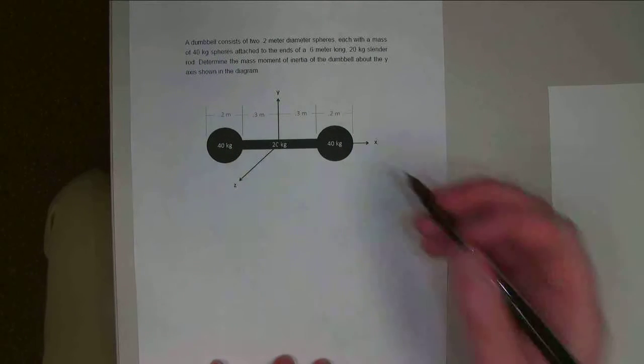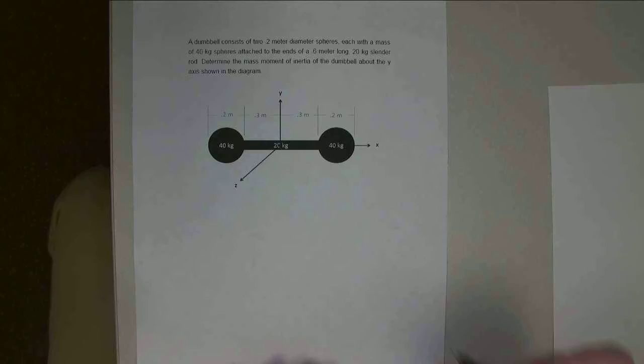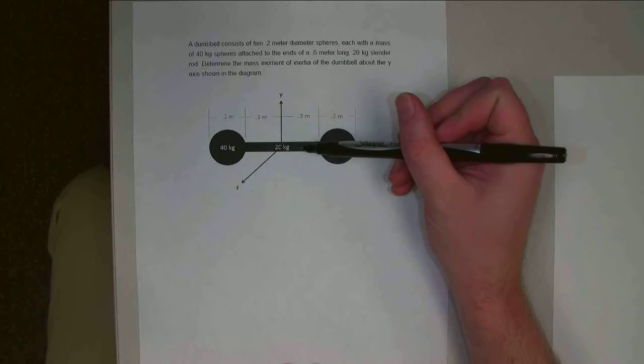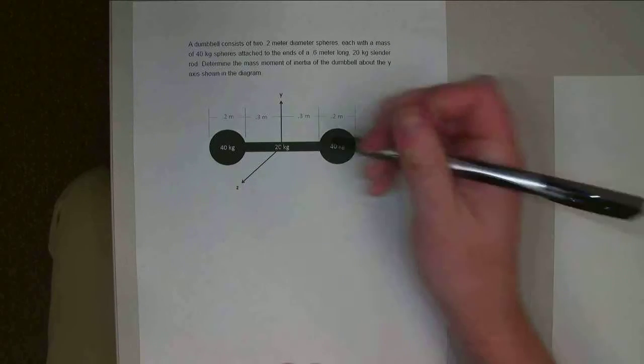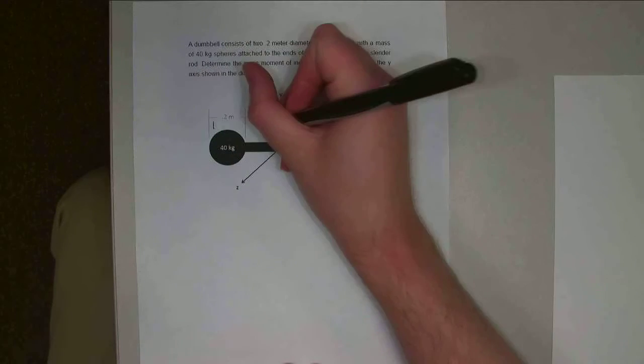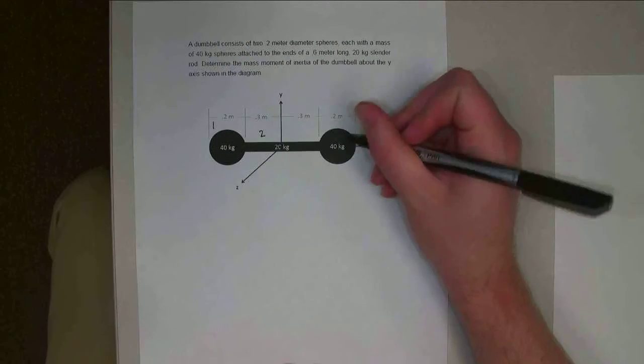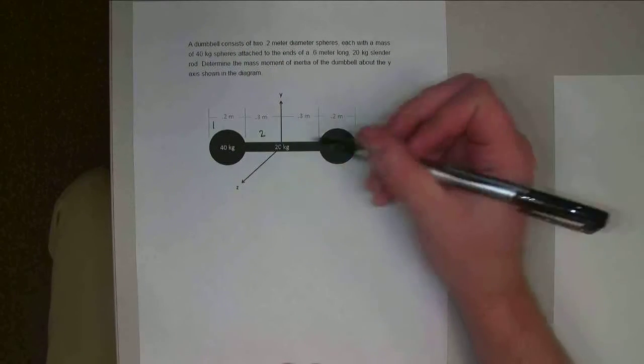All right, so we have three different shapes. We've got a sphere over here, a sphere over here, and a center slender rod. I'm going to call this one one, this one two, and I'm going to notice that the second one is just the same. It's got the same distance, same shape, same masses.